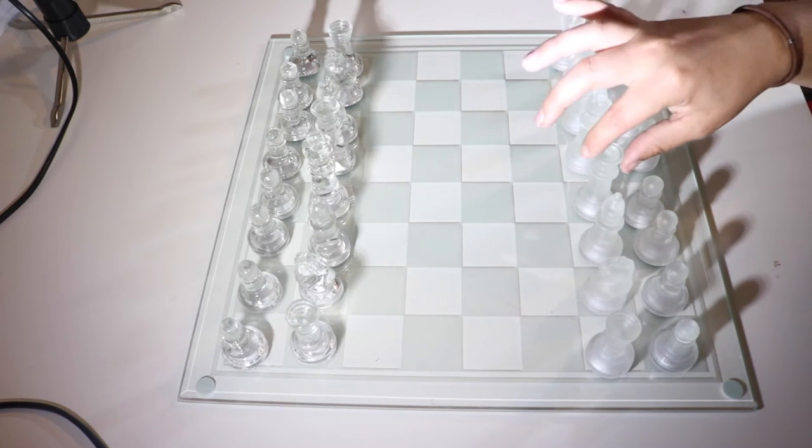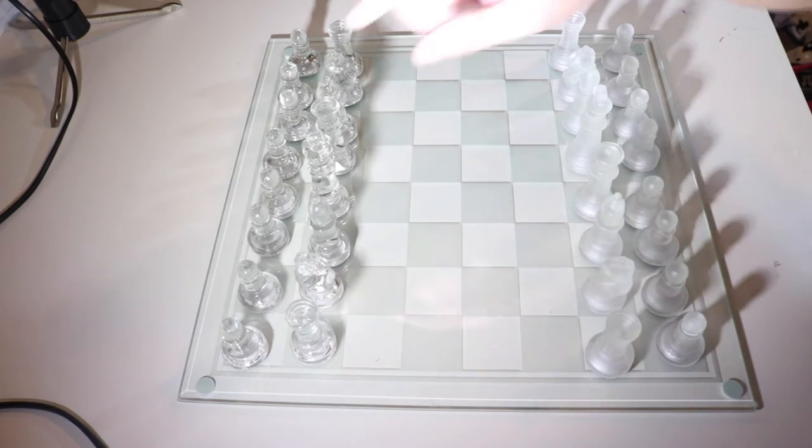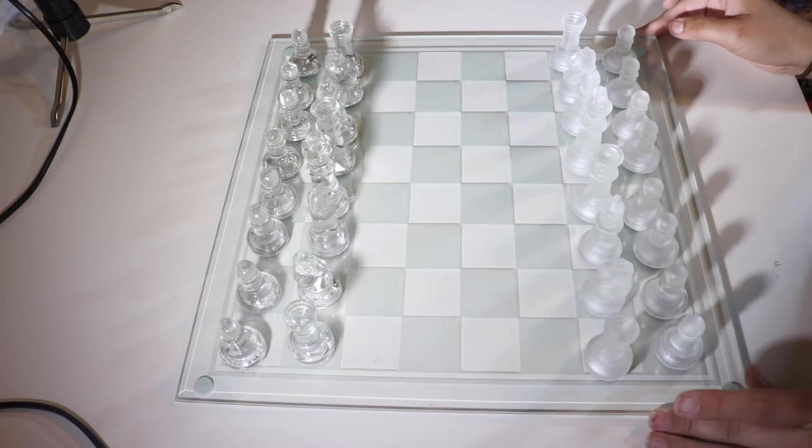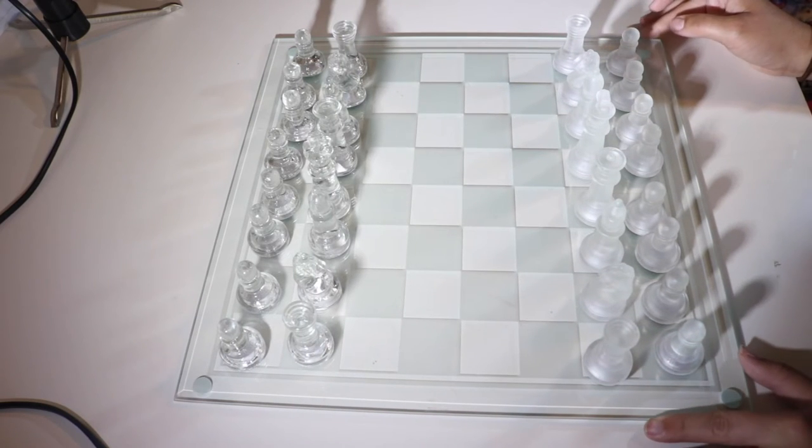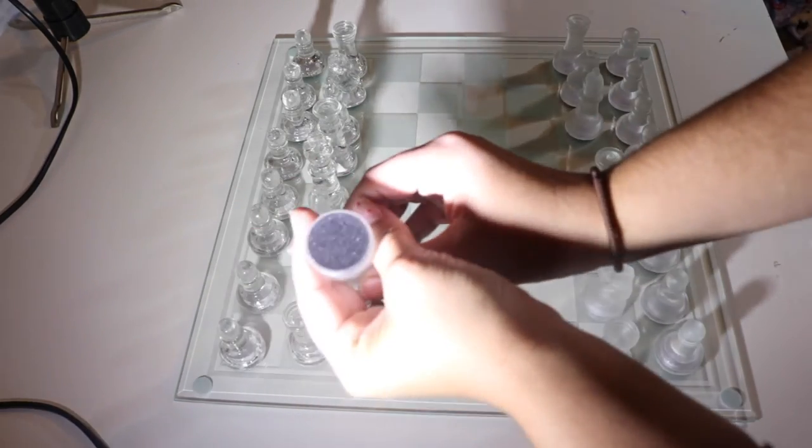This side here is more of a frosted look, and these are more of a clear chess pieces. And these guys are absolutely, absolutely beautiful. And one of the things that I do like is on the bottom here, they do have little pads of felt.